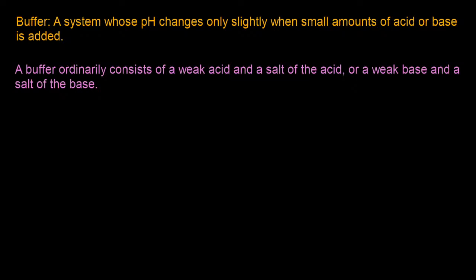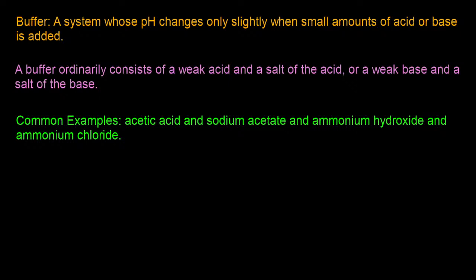The salt of the acid is sometimes called the conjugate base. A buffer can also be made up of a weak base and the salt of the base, also known as the conjugate acid. For a weak acid and the salt of the acid, a common example is acetic acid together with sodium acetate. For a weak base and the salt of the base, a common example is ammonium hydroxide together with ammonium chloride.